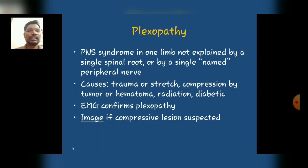Starting with an introduction to plexopathy: it is a peripheral nervous system syndrome in which one limb is not explained by a single spinal root or by a single named peripheral nerve. The major etiological causes are trauma or sustained stretch, and compression by a tumor or hematoma, most commonly occurring due to direct impact, roadside accidents, and road traffic accidents. Besides these, radiation and diabetes are other causes.